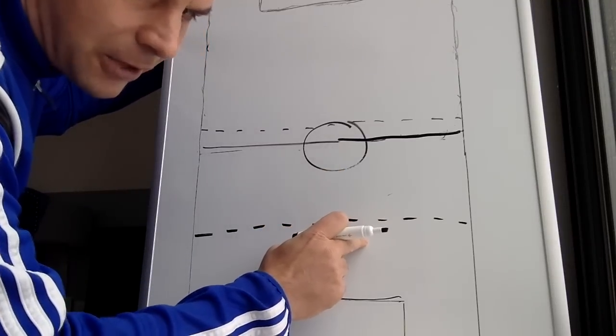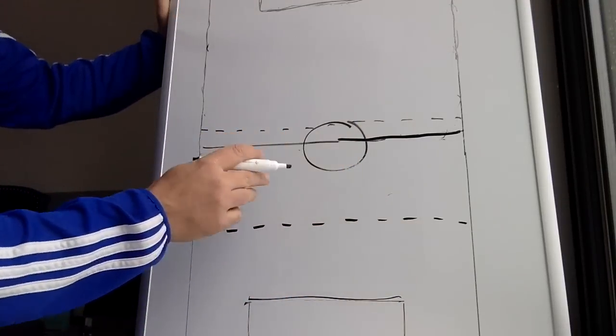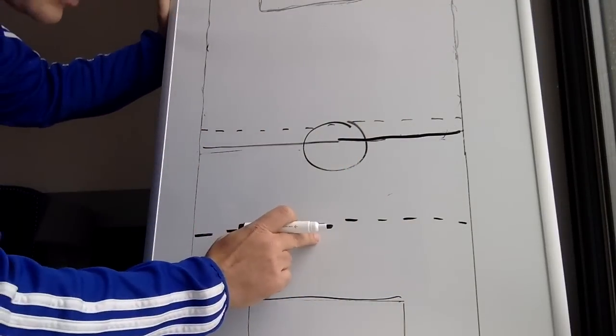So maybe you drop another seven yards and it makes life a lot easier. Maybe you drop them both. You got to decide. Now, line of confrontation, line of restraint.